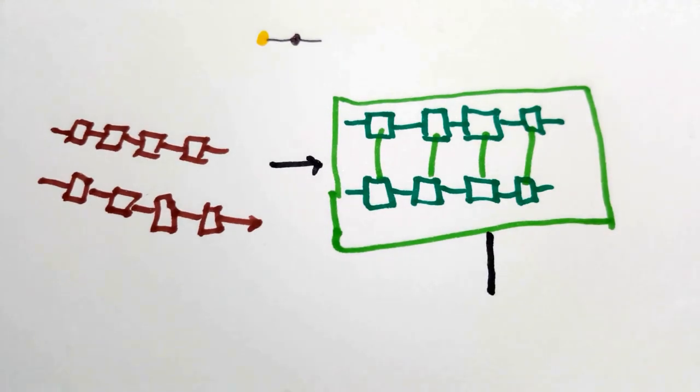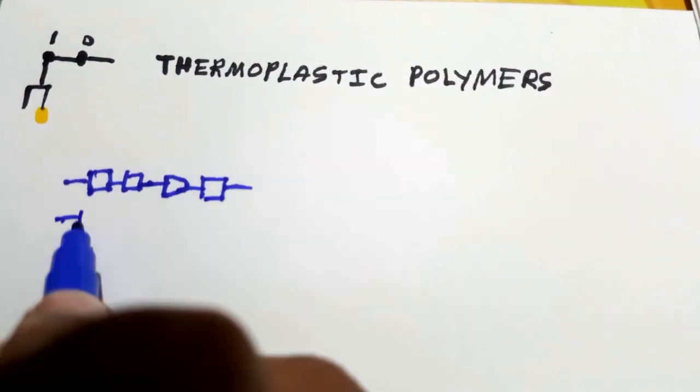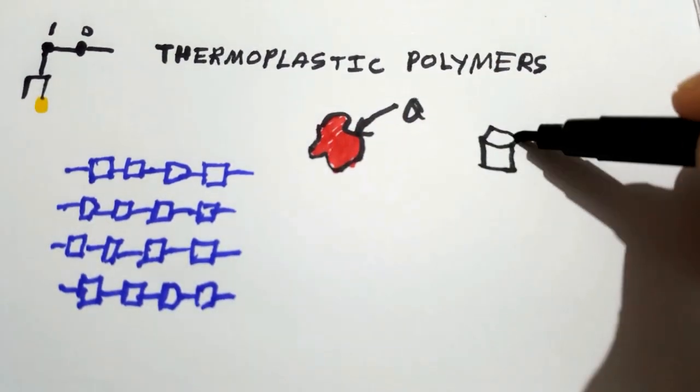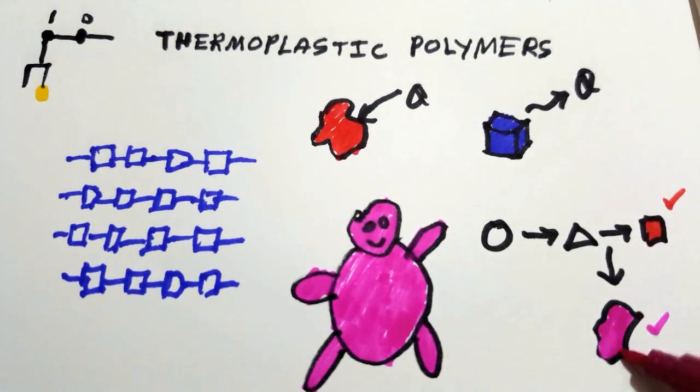Based on the mechanical response at high temperatures, polymers are classified into two major categories. First are thermoplastic polymers which soften when heated and harden when cooled down. These polymers are usually soft and can be repeatedly moulded into required shapes.